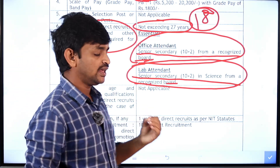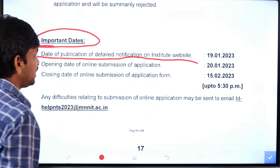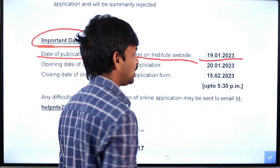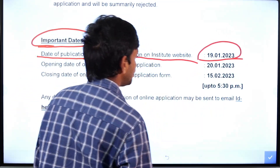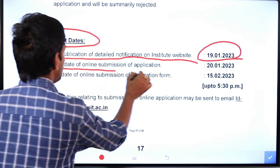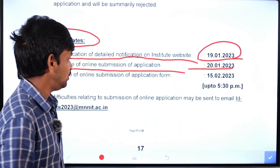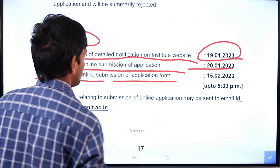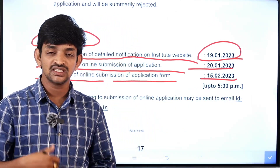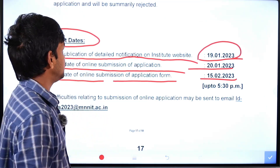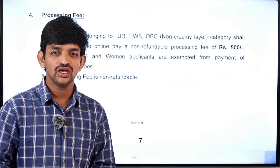Now, the main and important dates: first, the date of publishing of the detailed notification on the institute's website. The online application process starts from January 2023. The closing date for online submission of applications — the last date — is February 10th.